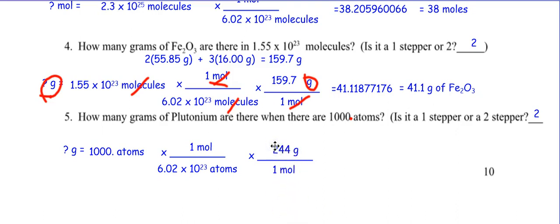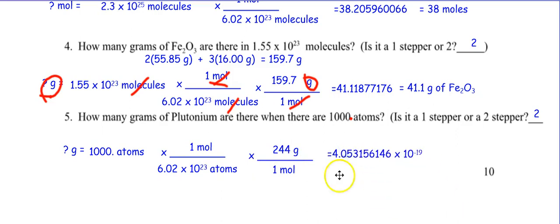Now I'm ready to do my math: 1,000 divided by 6.02 times 10²³, times 244. It is a really small, small mass. I don't think the scientists in Hanford, Washington have a scale that would go to the nearest 10⁻¹⁹ grams. I have four sig figs, so I go one, two, three, four — and there's my answer.